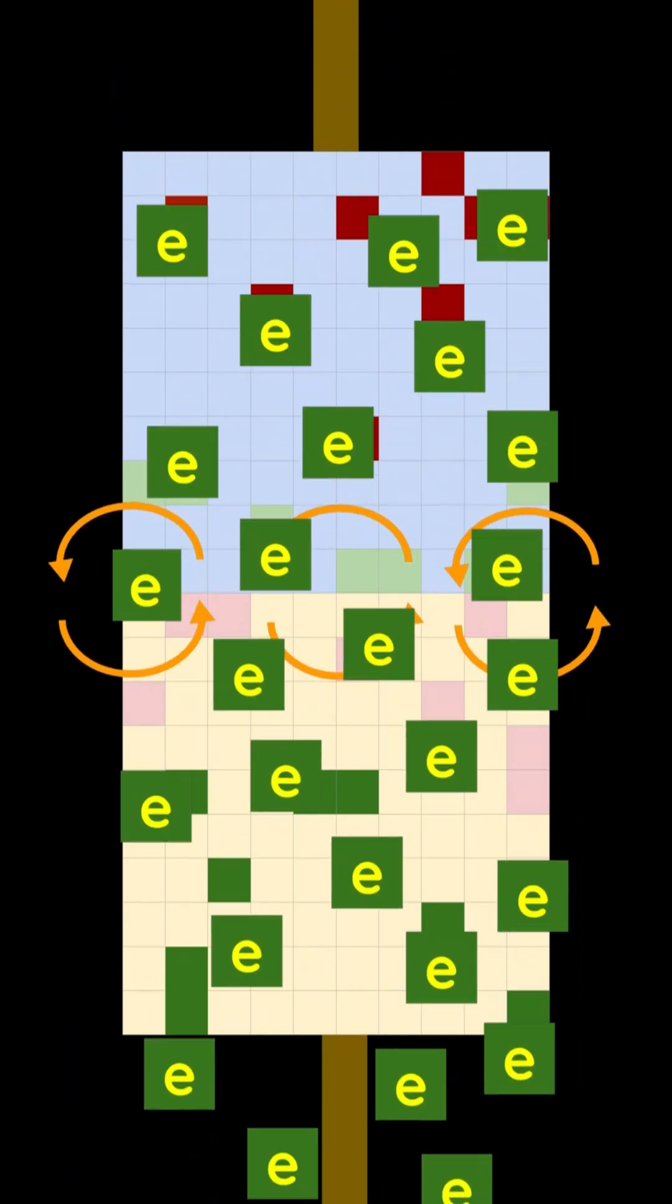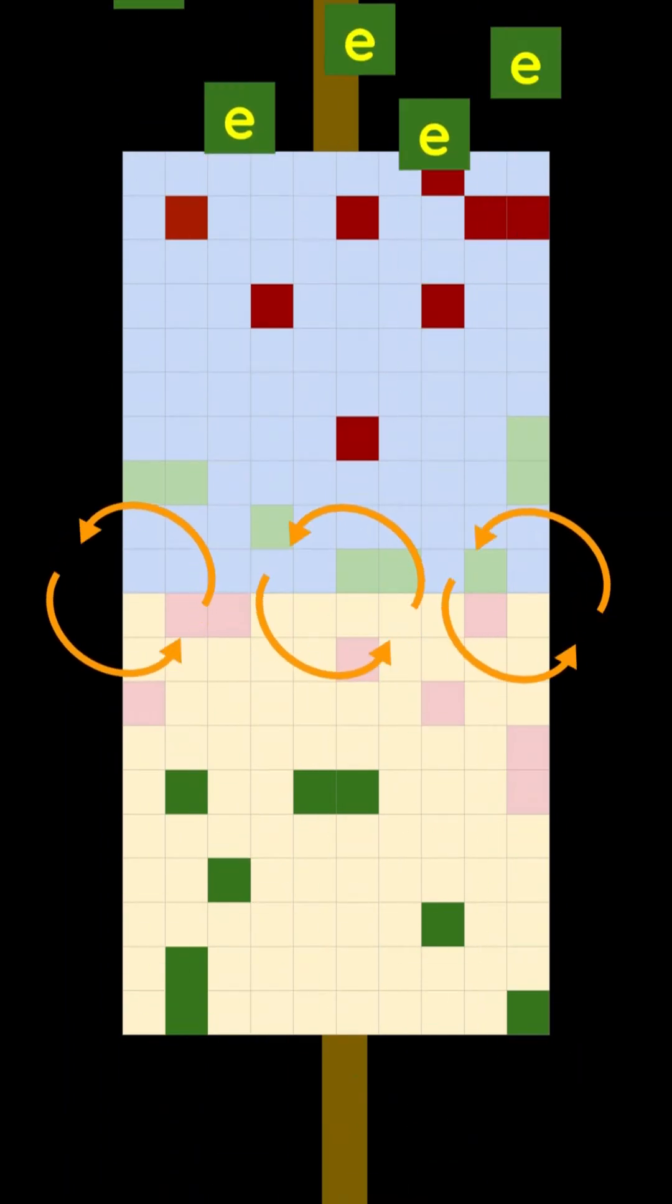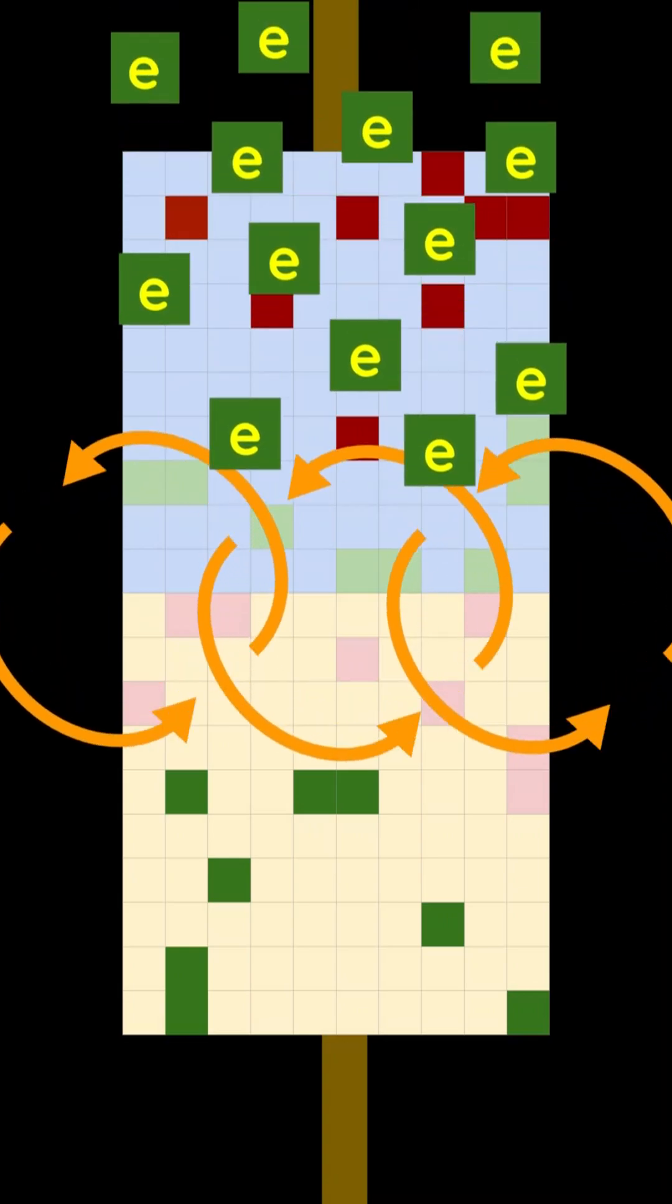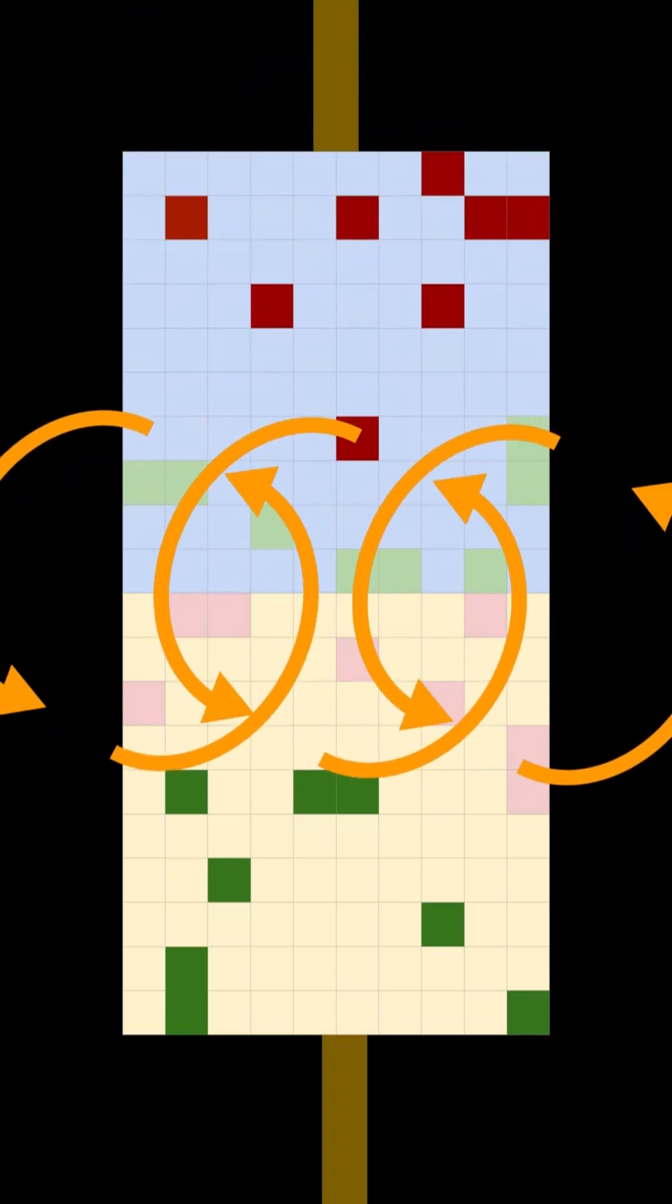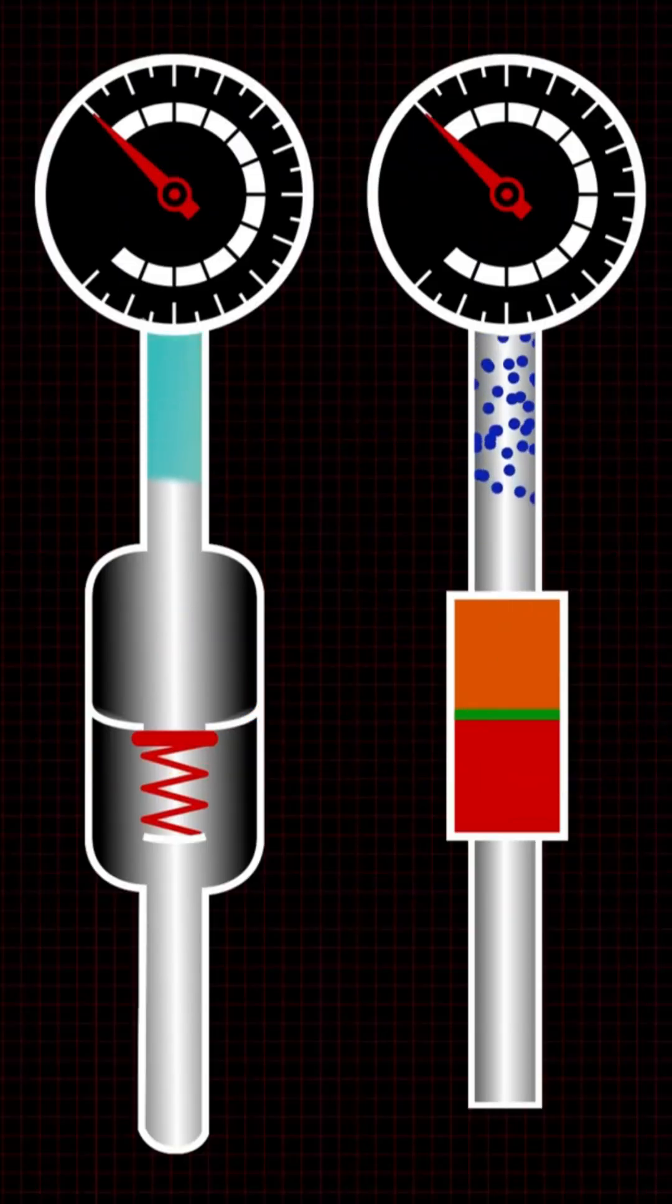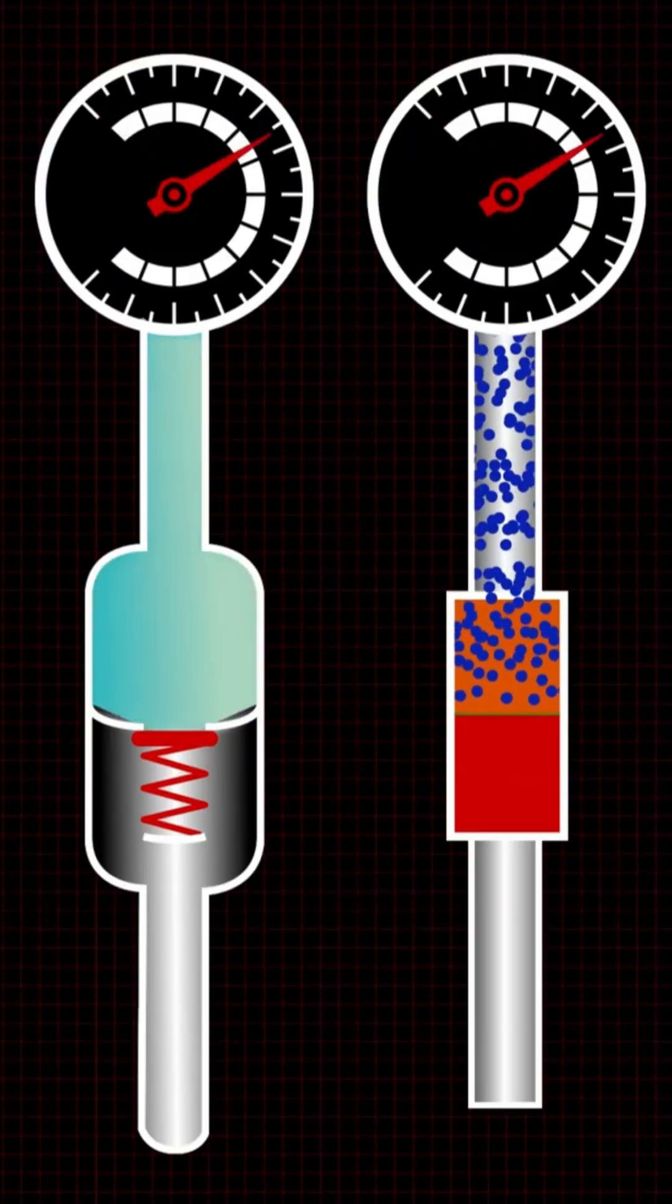But current flowing from the p-type actually increases the barrier by feeding the vortex. This makes the semiconductor act as a valve for electricity.